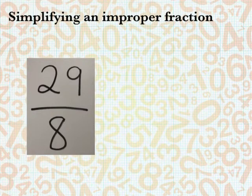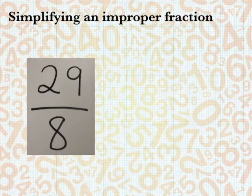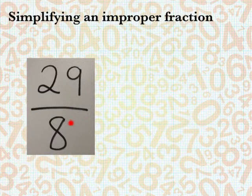The next item we are going to look at is simplifying an improper fraction. We know that 29 eighths is an improper fraction because the numerator is greater or bigger than the denominator, which makes it improper. So what we want to do is make this into a mixed number.